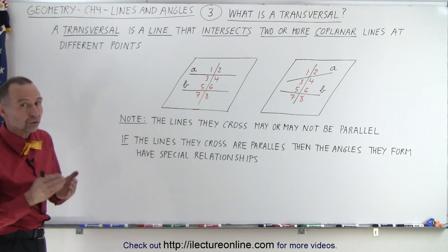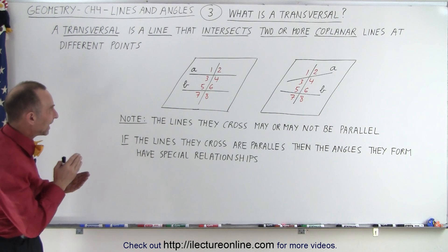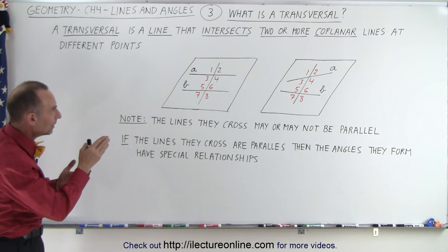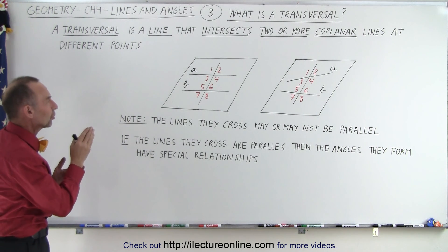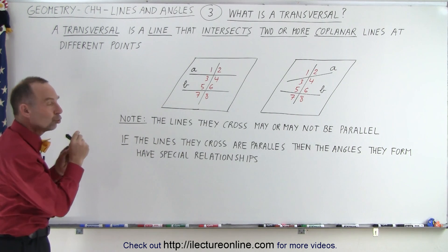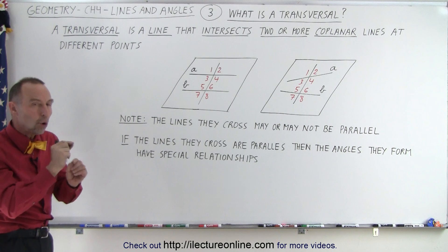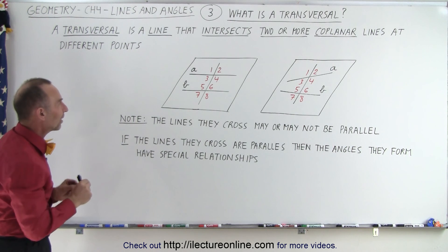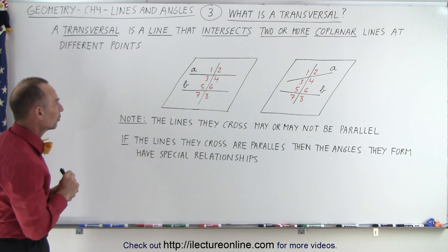So remember, a transversal is a line that crosses two coplanar lines at different points.